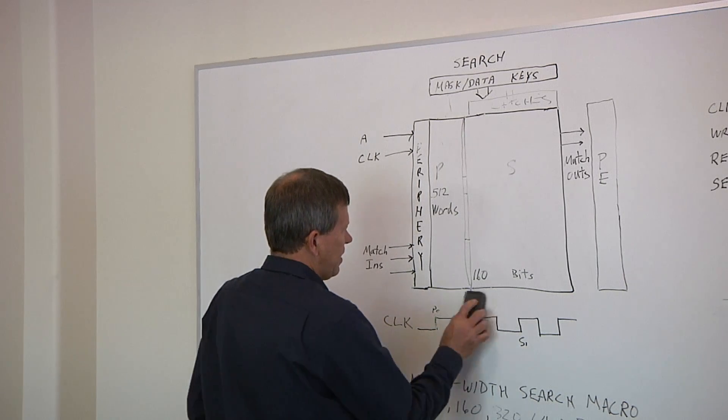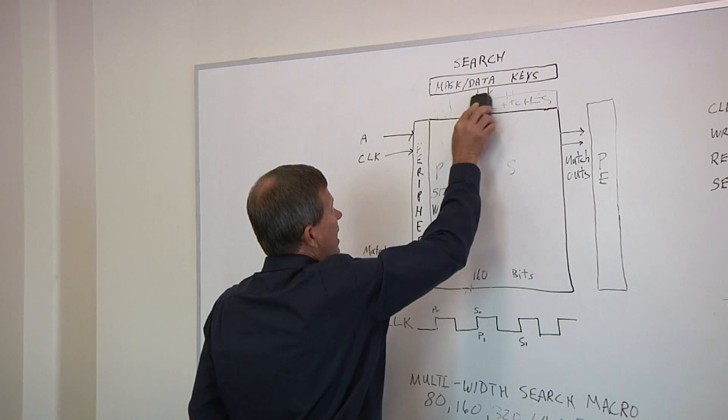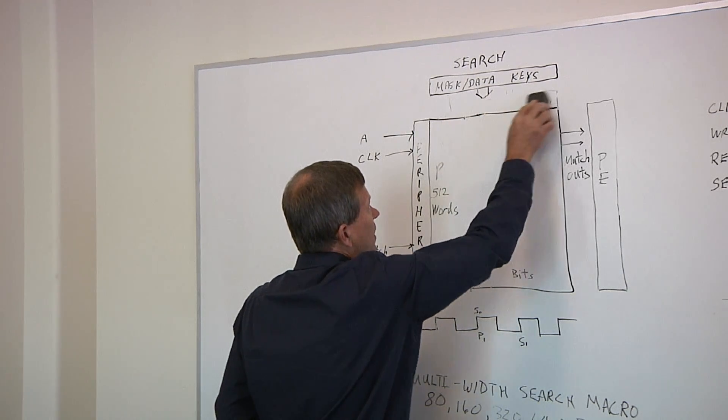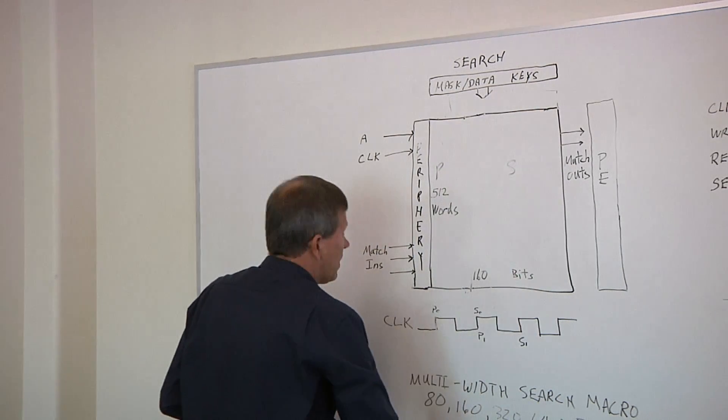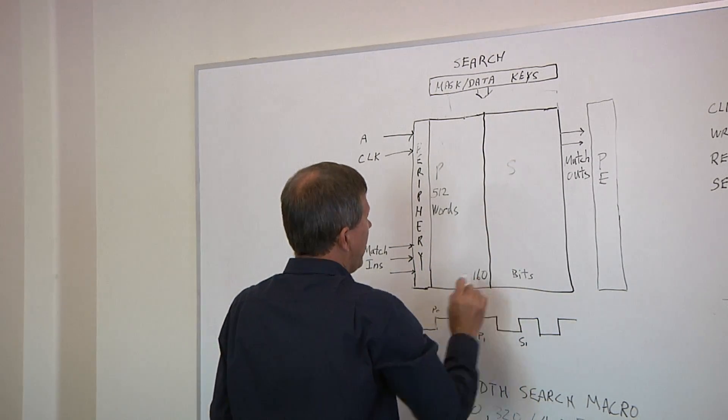If I take and erase this previous example here, and take these latches out, this dual architecture works on splitting the array in half.